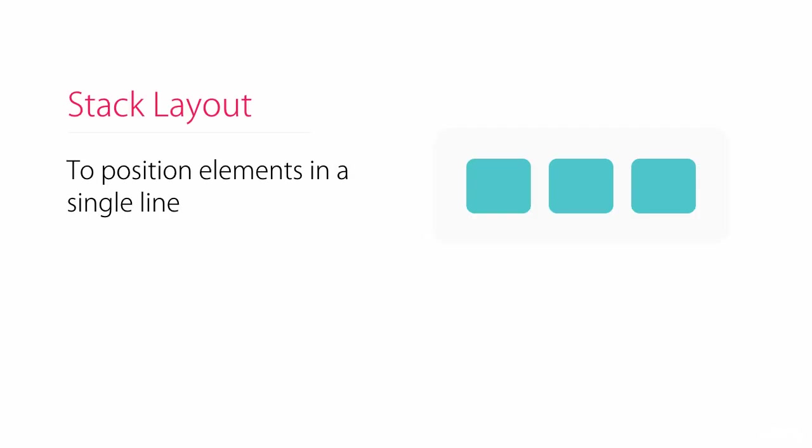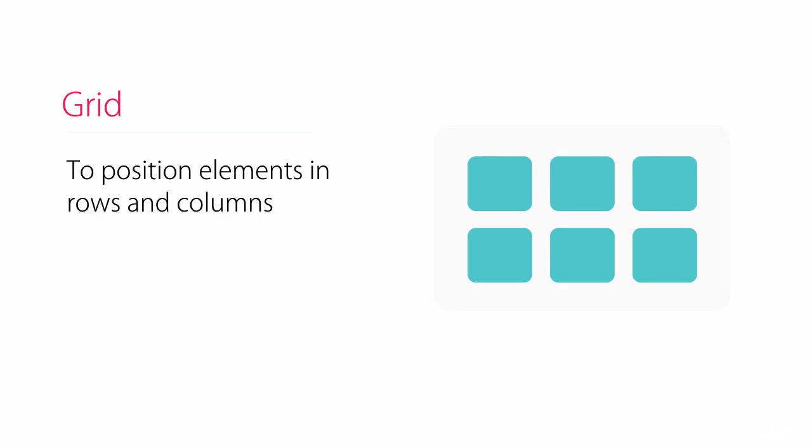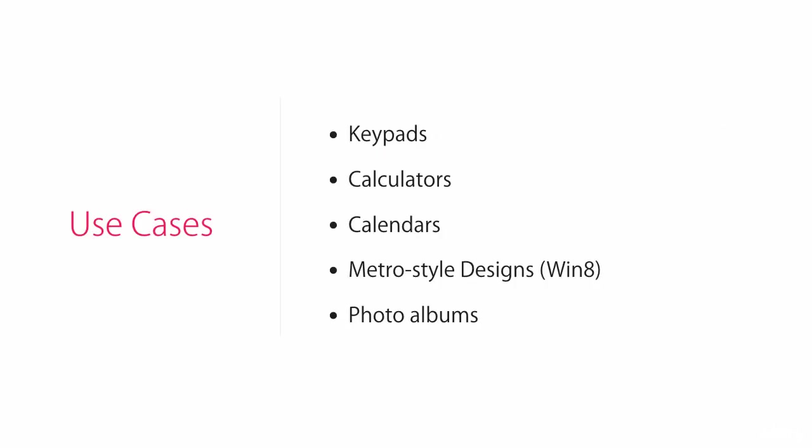In the last lecture you learned about stack layout, which we use to position elements in a single line vertically or horizontally. Another layout in Xamarin.Forms is grid, which we use to position elements in rows and columns. Real world examples of grids are in keypads, calculators, calendars, metro-style designs in Windows 8 or higher, photo albums, and so on. Let's see how we can use a grid.